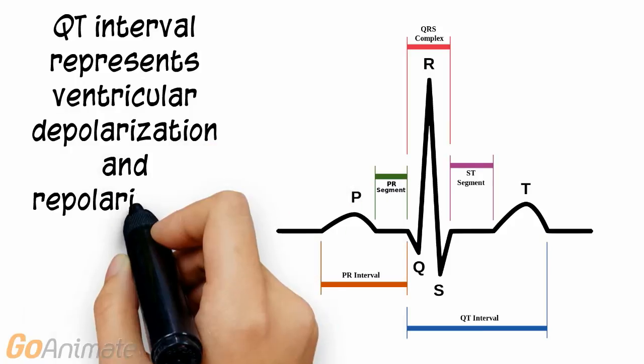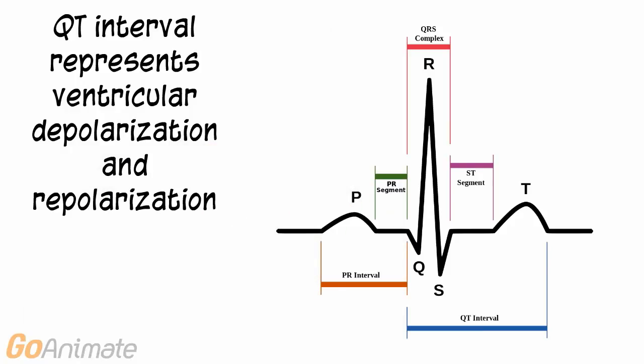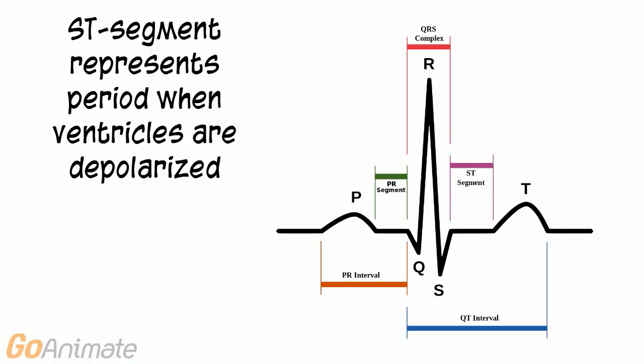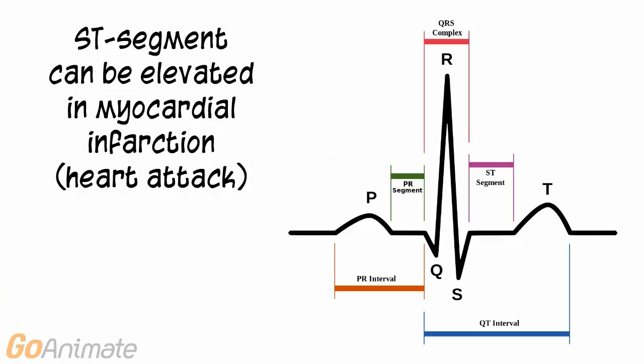The QT interval represents ventricular depolarization and repolarization. The ST segment represents the period when the ventricles are depolarized. The ST segment can be elevated in myocardial infarction, or a heart attack.